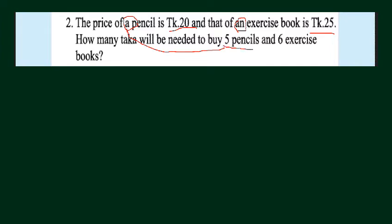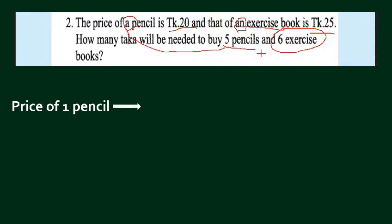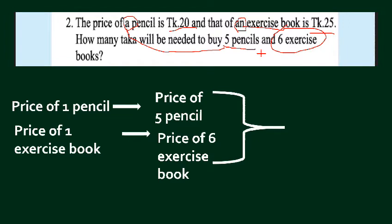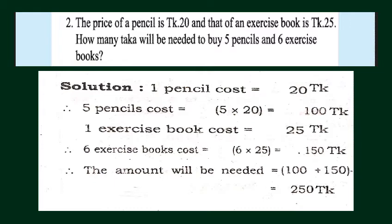From the cost of one pencil, we can find the cost of five pencils. From the cost of one exercise book, we can find the cost of six exercise books. By adding these two costs, we will find our required answer. From the price of one pencil, we find the price of five pencils by multiplying, then add the two totals.